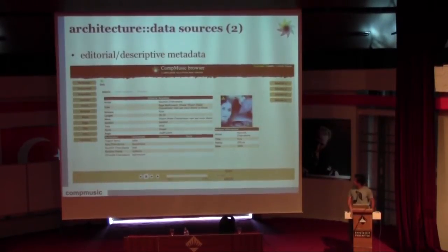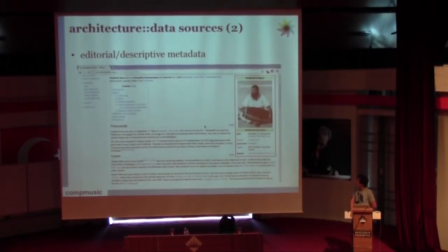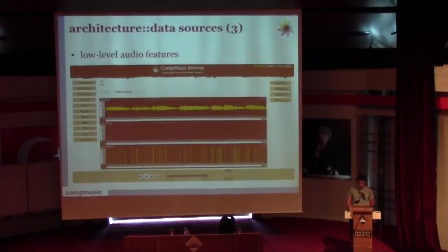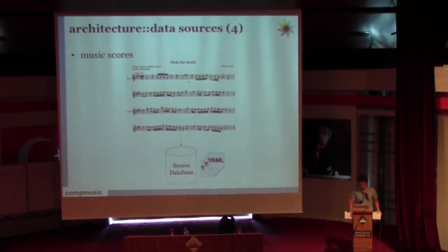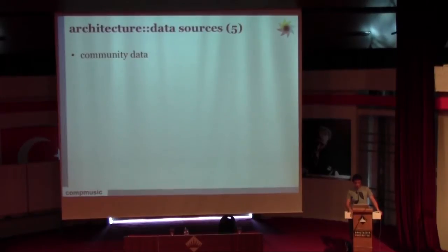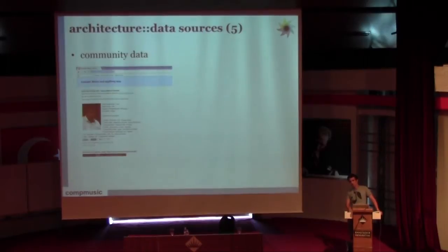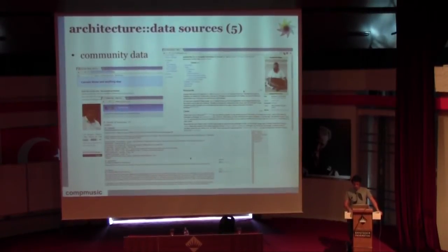Then there is the editorial and descriptive metadata. We should add this editorial metadata to MusicBrainz, and it will also be nice to contribute to improving Wikipedia articles. Regarding the low-level audio features, we want them to be state-of-the-art features so that we can rely on them — they should be considered as a grounding from which we build more high-level audio features. We also want to gather audio scores for those cultures that use them, like for example the Makam music in Turkey. And finally, semantic information coming from community data, also called user-generated content, that can come from blogs, from dedicated websites, from online discussion forums, and from Wikipedia.